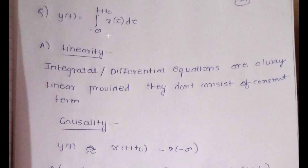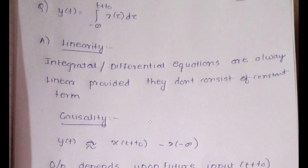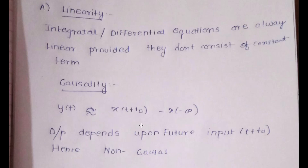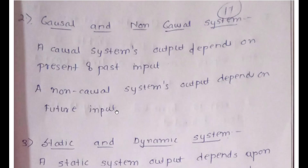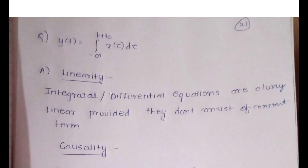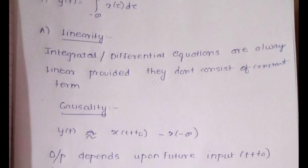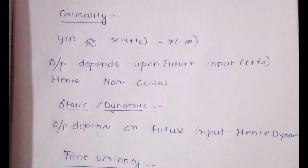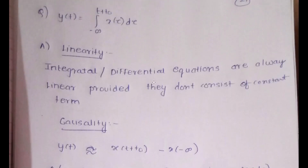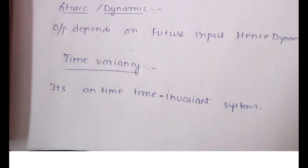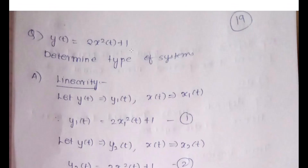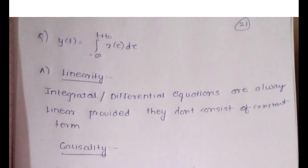For the static/dynamic check: since the output depends upon the future input (t+t₀), it is a dynamic system. For time variance/invariance: apply the t−t₀ substitution method — equations 1 and 2 remain the same, hence it is a time invariant system. You can solve any such question using this method: check linearity by superposition, causality by inspecting the time argument, static/dynamic by present vs. past/future dependence, and time invariance by the shift substitution.